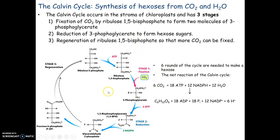Through that process, we take those two three-carbon sugars and perform a series of reductions until we form our hexose. The third step is that we have to regenerate our ribulose 1,5-bisphosphate so that we can fix more CO2.